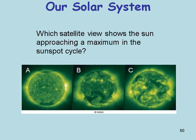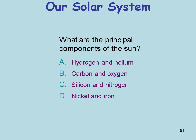Which satellite view shows the sun approaching a maximum in the sunspot cycle? That would be C — you can see there's lots more activity. What are the principal components of the sun? That's hydrogen and helium. Stars are mostly hydrogen — one proton — and helium — two protons.